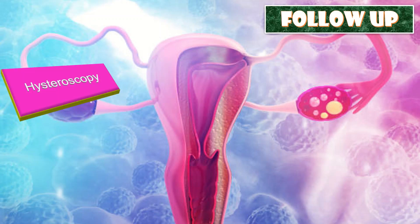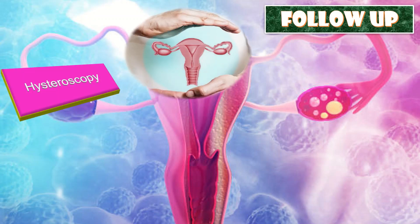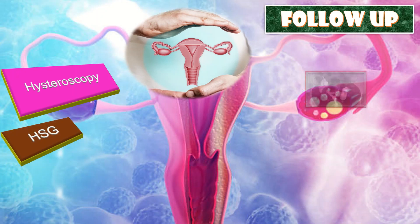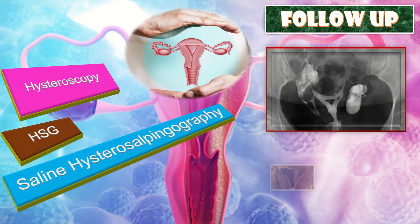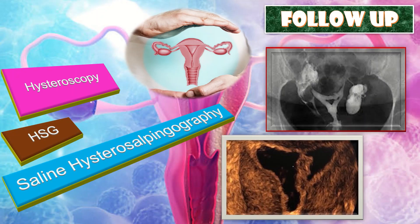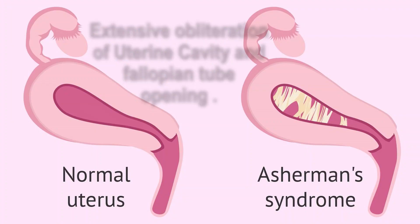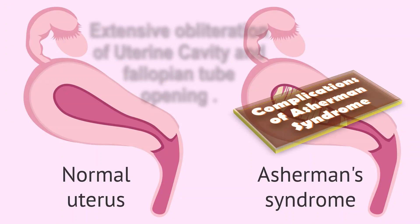How to do follow-up after treating a patient with Asherman syndrome? That is done by hysteroscopy, by sonography, and by saline hysterosalpingography.